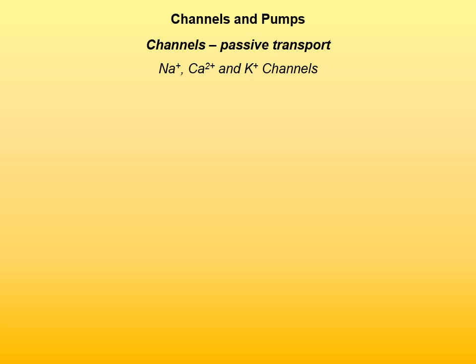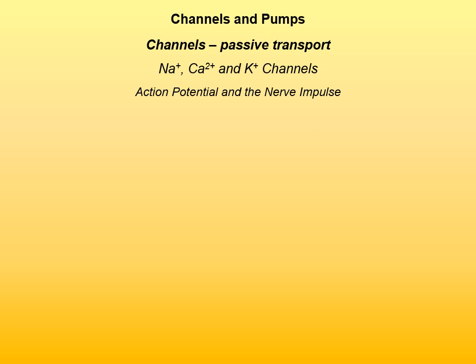We are going to look at action potential and the nerve impulse. A nerve impulse is an electrical signal produced by the flow of ions across the plasma membrane of a neuron. The cell interior contains a high concentration of potassium ions and a low concentration of sodium ions, generated by the pump sodium-potassium ATPase, covered later in this presentation. In the resting state, membrane potential is minus 70 millivolts. A nerve impulse, or action potential, is generated when the membrane is depolarized.